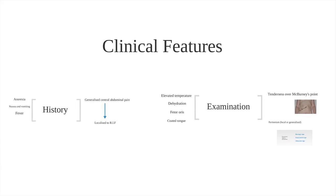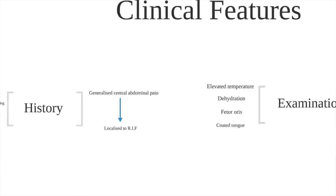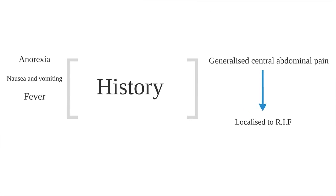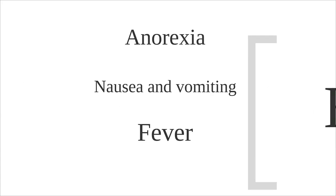Now let's move on to consider the clinical assessment of the patient who may have acute appendicitis. The classical history of acute appendicitis is abdominal pain that starts in the centre of the abdomen and is often vague in nature. This then worsens and localises to the right iliac fossa. The pain is characteristically worse on movement. This is nearly always accompanied by varying degrees of anorexia, nausea and vomiting, thought to be secondary to bowel stasis. Fever may also occur, but is typically low grade, usually between 37.5 and 38.5 degrees.